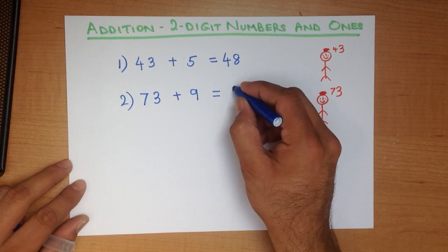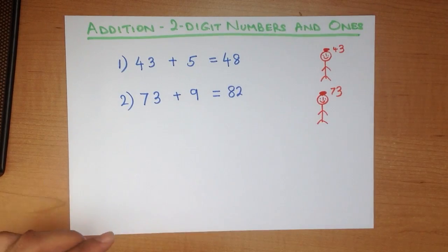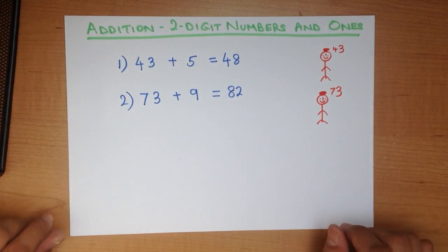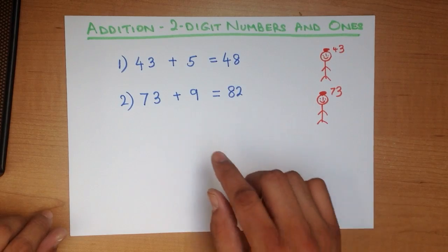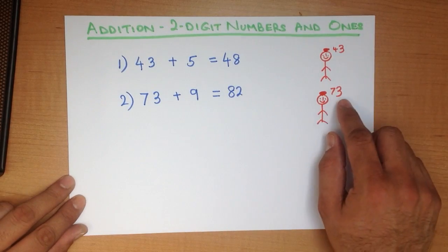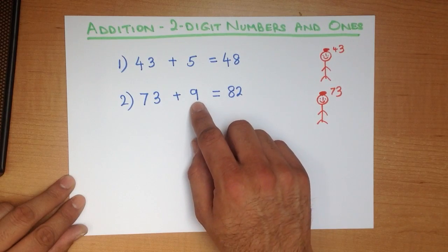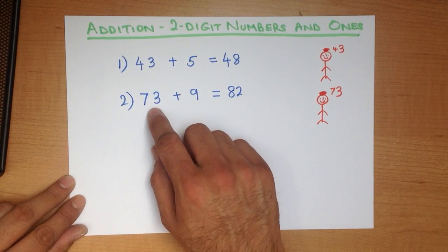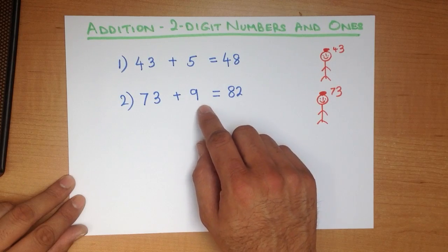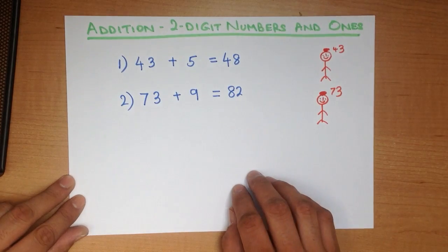That is our answer. 82. Again, that was nice and simple. The larger number, we say, is on our head. Plus means we are going to count forward. That's how many fingers we hold up. So we count from 73 going forwards and we get to the right answer.